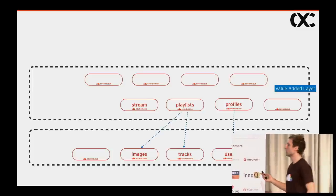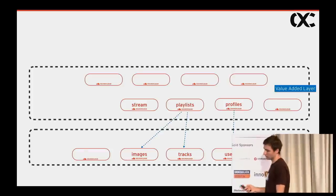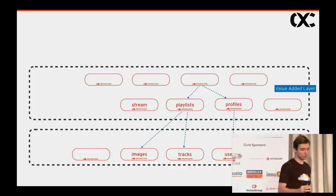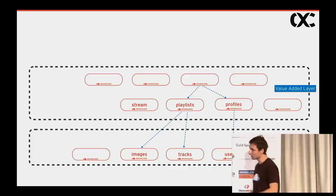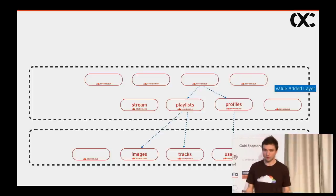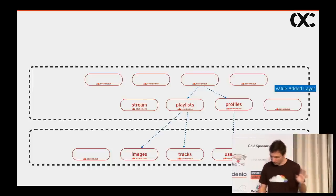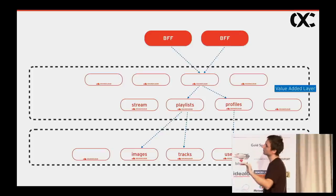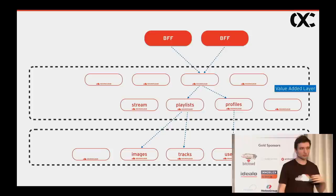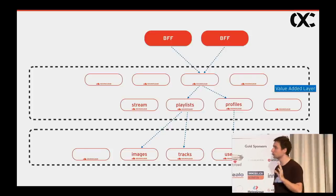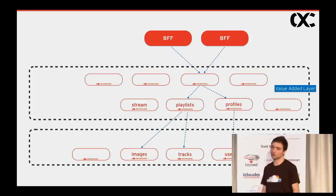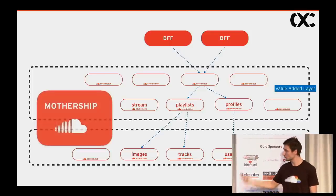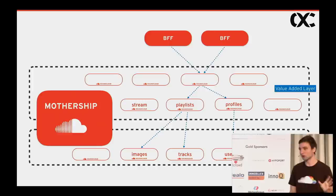On top of the foundation layer, we created the value added layer. The vast majority of our microservices live here and implement the meat of the business logic. Their responsibility is to go to the foundation layer, fetch the necessary data, perform operations on it to satisfy the feature they're implementing, and send it back up. Services on this layer can still aggregate data from peer services, which leaves some gap for circular dependencies, but as long as we keep the structure in mind — requests going from BFF to value added layer to foundation layer — it gives us clear guidance when building features.